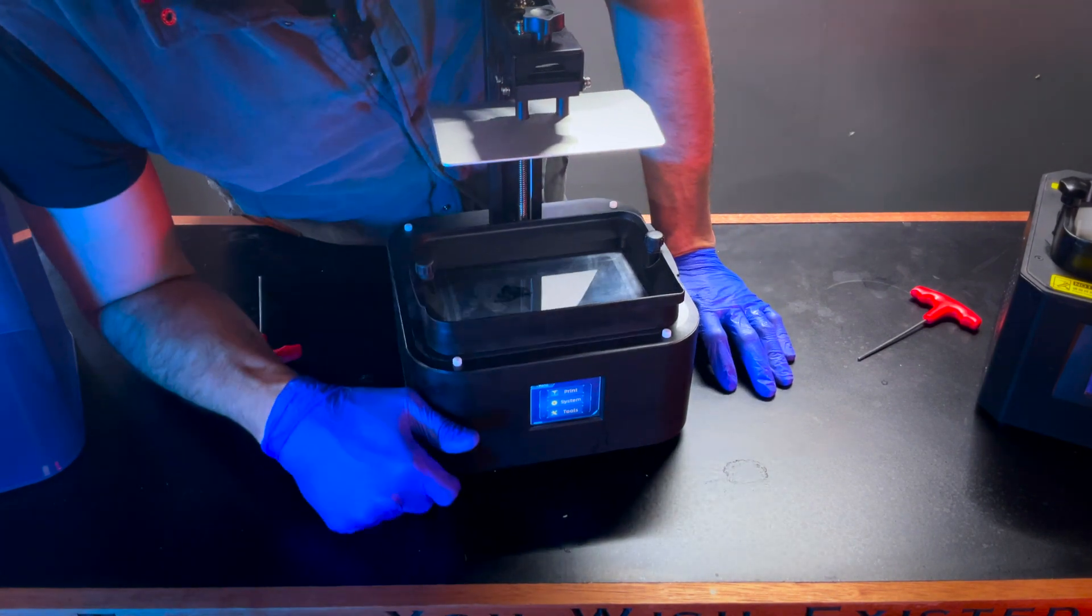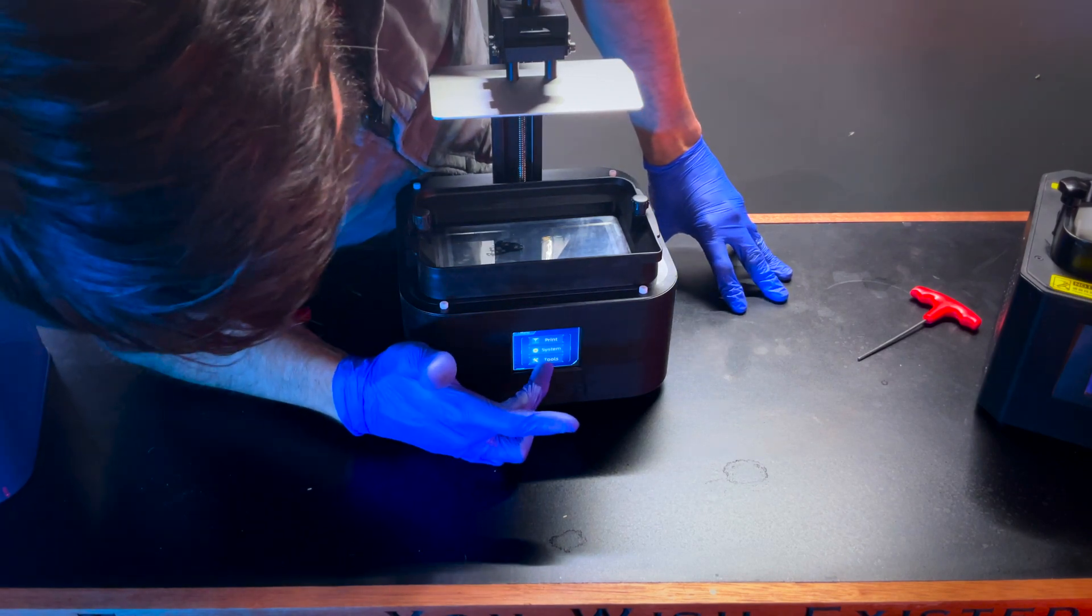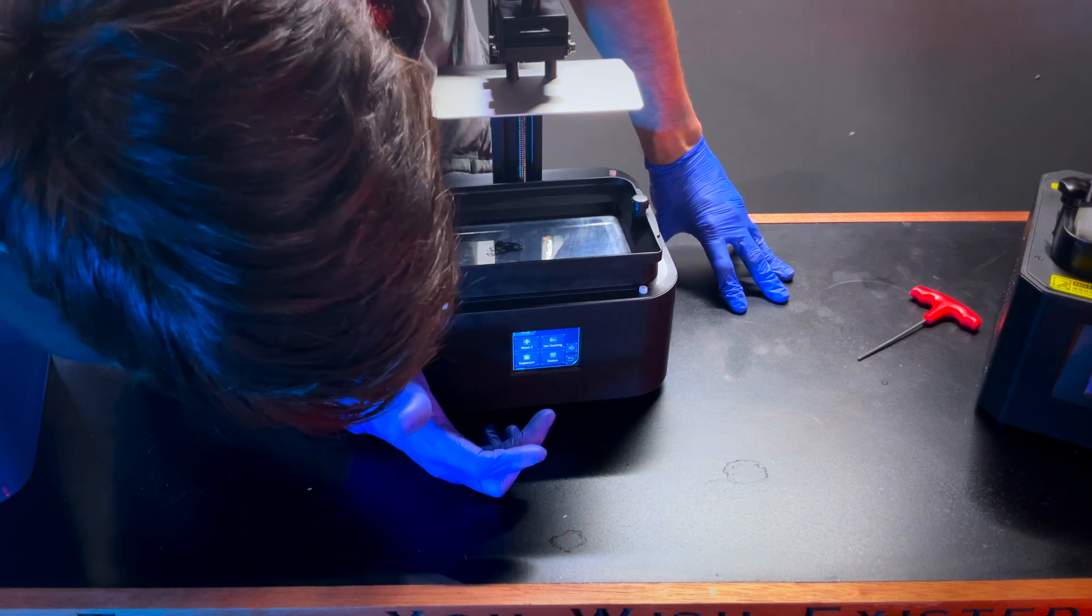Once you have loosened it enough for that to move freely, you're going to want to go to the menu on your printer. And it's different for every printer. So this one, it looks like you go to tools. You go to move Z axis.